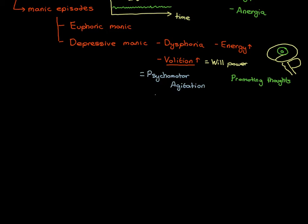People with depressive manic episodes often describe racing thoughts — feeling as though they're thinking far quicker than other people, and indeed they are. Remember the last time you were ill, how sluggish your thoughts were — that was because your volition was reduced and promoting thoughts up was incredibly slow. In bipolar manic episodes, volition goes through the roof and therefore you end up with really quick thoughts — the fancy terminology for that is racing thoughts.